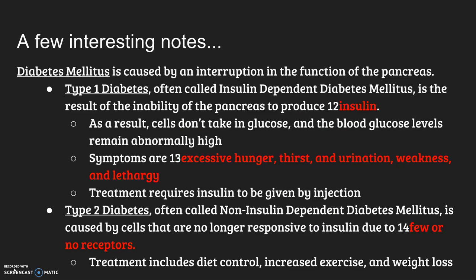Diabetes mellitus is caused by an interruption in the function of the pancreas. Type 1 diabetes, also called insulin-dependent diabetes or juvenile onset diabetes, is the result of the inability of the pancreas to produce insulin — that's from the beta cells within the pancreas. As a result, the cells of your body don't take in glucose, and the blood glucose levels remain abnormally high. Symptoms of high blood sugar include excessive thirst, excessive hunger, an excessive need to urinate, also weakness and lethargy. Treatment requires insulin to be given by injection because your body's not making it.